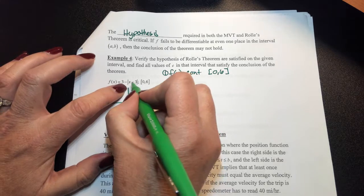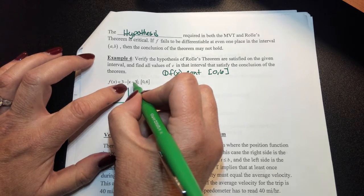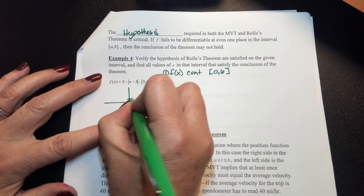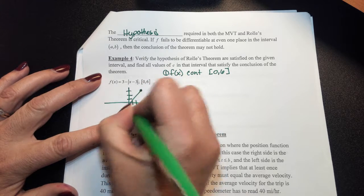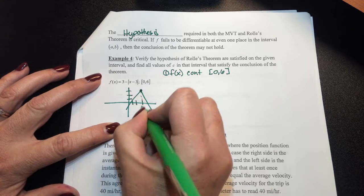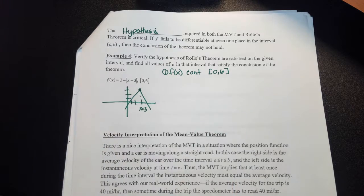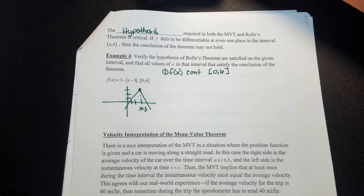You've got to check to see exactly where is that corner point or where is the vertex. Again, I know I've got my absolute value function. It's reflected. I shift it to the right 3 and then up 3. So at x equals 3, is this function differentiable? No.